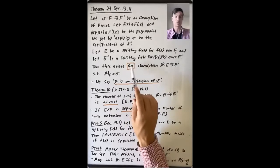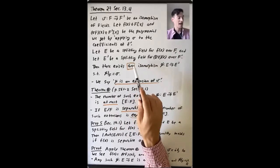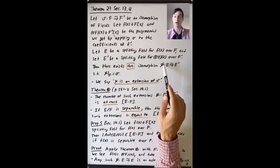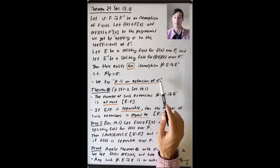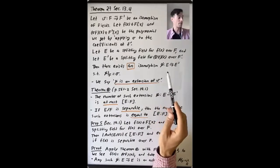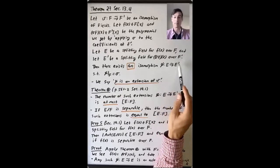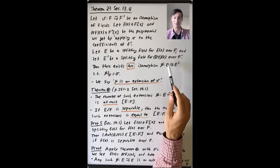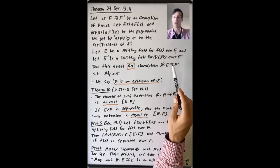We take a splitting field E for f(x) over F, and E' a splitting field for σ(f(x)) over F'. What we proved is that there is an isomorphism ψ from E to E' such that the restriction of ψ to F is the isomorphism σ we started with. So we proved that there was one such isomorphism, and we say that ψ is an extension of σ.